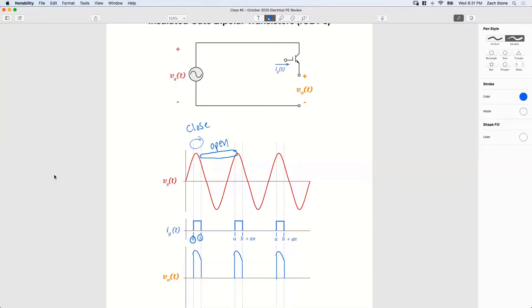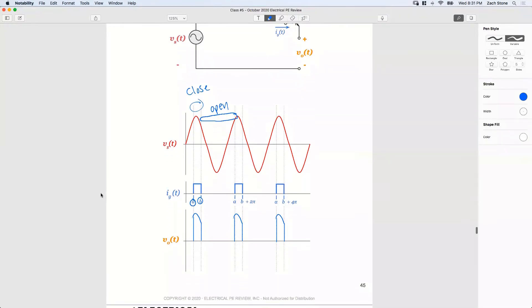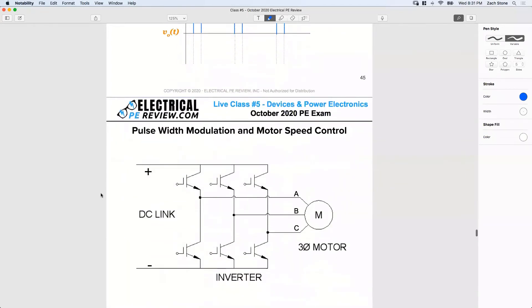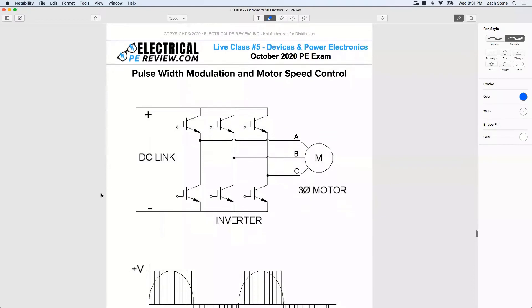Typically, IGBTs are what's used in most switching circuits. So let's look at how do we use IGBTs to control the speed of a motor.